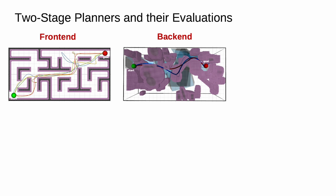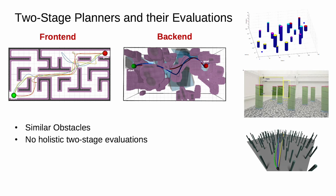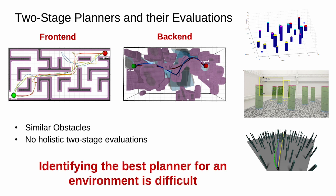But their evaluation has been lacking in two ways. First, they are conducted in environments with similar obstacles, like vertical poles. Second, they are typically focused on overall performance and not isolating the effect of each stage separately. Both shortcomings make identifying the best two-stage planner for a new environment difficult.